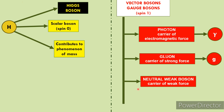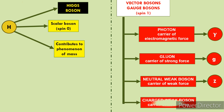Neutral weak boson par koi charge nahi hota, spin iska bhi 1 hota hai baaki gauge bosons ki tarah, aur ise Z se represent karte hain. Aur jo fourth type of boson hai, yeh bhi weak force ka carrier hai, lekin yeh charged hai — is par positive aur negative charge hota hai. Isko charged weak boson kehte hain aur W plus minus se represent karte hain. Toh yeh saare gauge bosons they are considered to be carriers of force.